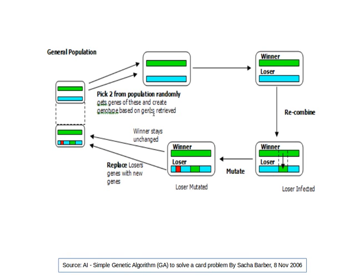Looking at this graphically: we have our population, we randomly pick two chromosomes, and using their fitness we determine a winner and a loser. The best is the winner, the worst is the loser. We then perform recombination or crossover on the loser only — copying from the winner to the loser — using one-point or two-point crossover. After that, we perform random mutation as explained previously. Only the loser is changed.